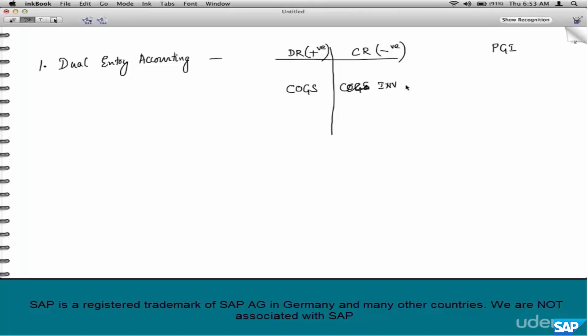SAP automatically takes care of it. The only point that we have to understand here is every transaction involves an equal amount of credits and debits. How about posting an invoice? We know it affects accounting.